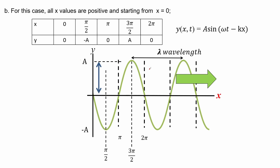For letter B, x values are positive, so the wave is going towards the positive x-axis — moving to the right. We use the same parameters but all positive, with t set to 0. At x = 0, sine of 0 gives y = 0, so it starts from the origin. For x = π/2, this gives a negative π/2 inside the sine, so sine of -π/2 gives a negative amplitude.